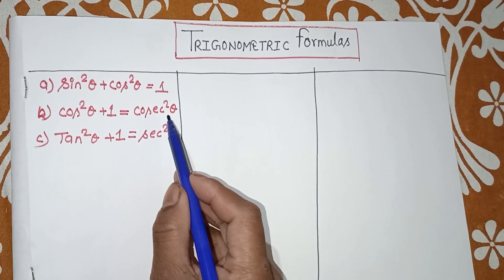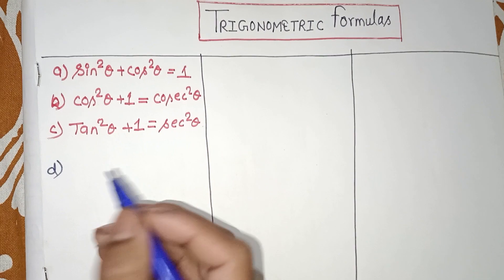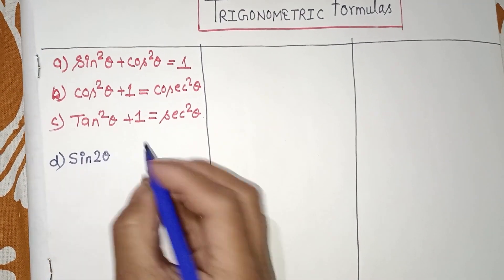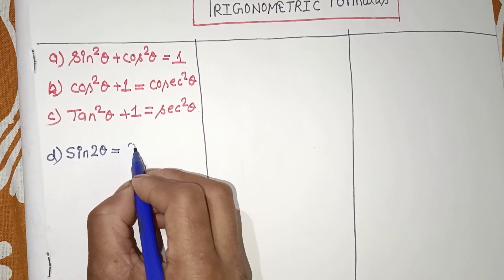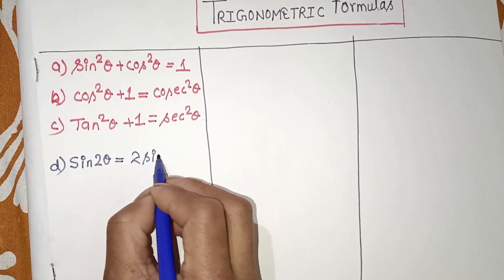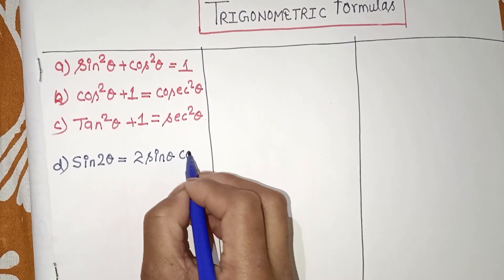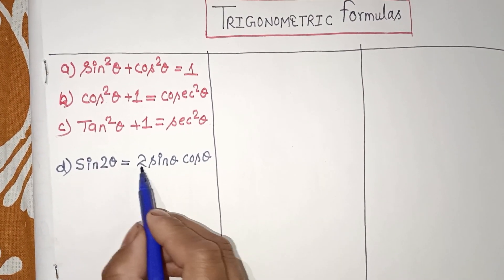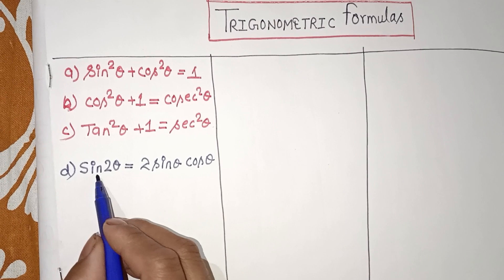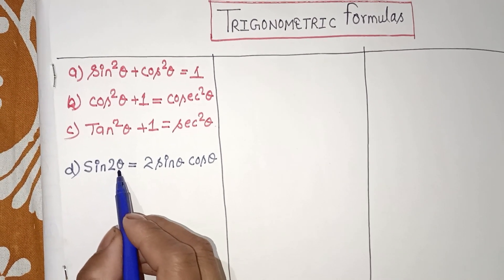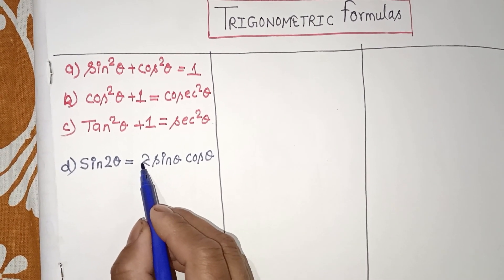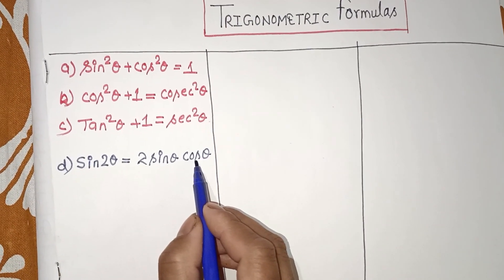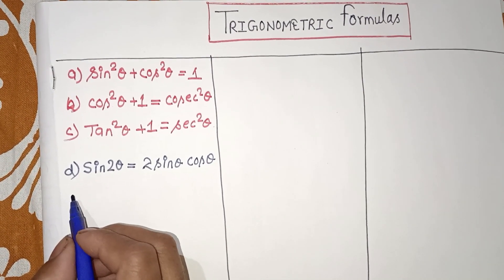The next formula is sin 2θ = 2 sin θ cos θ. So sin 2θ is equal to 2 sin θ into cos θ. When we take angle 2θ, the formula becomes 2 multiplied by sin θ into cos θ. This is a very simple formula we need to learn.